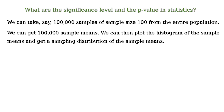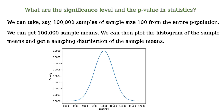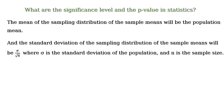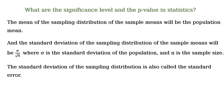We can then plot the histogram of the sample means and get a sampling distribution of the sample means. As discussed in a previous video, the mean of the sampling distribution of the sample means will be the population mean, and the standard deviation of the sampling distribution depends on the population and n, the sample size. This standard deviation of the sampling distribution is also called the standard error.